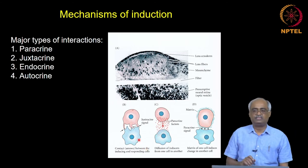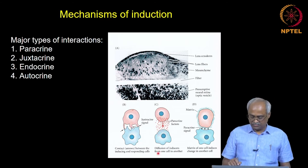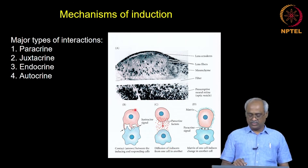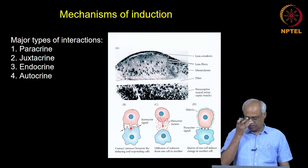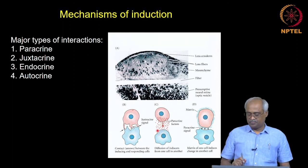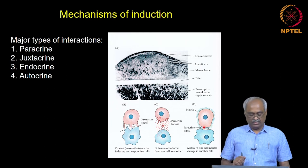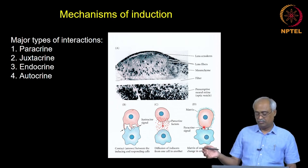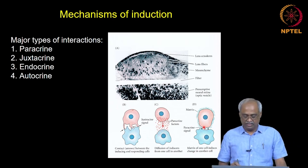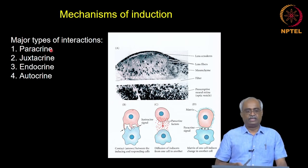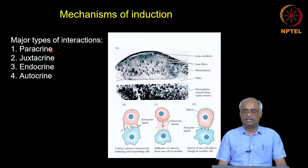In another situation, molecules produced by the inducer can diffuse in the vicinity — the distance varies significantly but not as far as endocrine signaling — these are called paracrine signaling. Most cell-cell signaling involved in development is of this paracrine nature. There is also a situation where the paracrine signal is actually from the ECM — the extracellular matrix. In the next few classes we will discuss paracrine and juxtacrine signaling mechanisms.